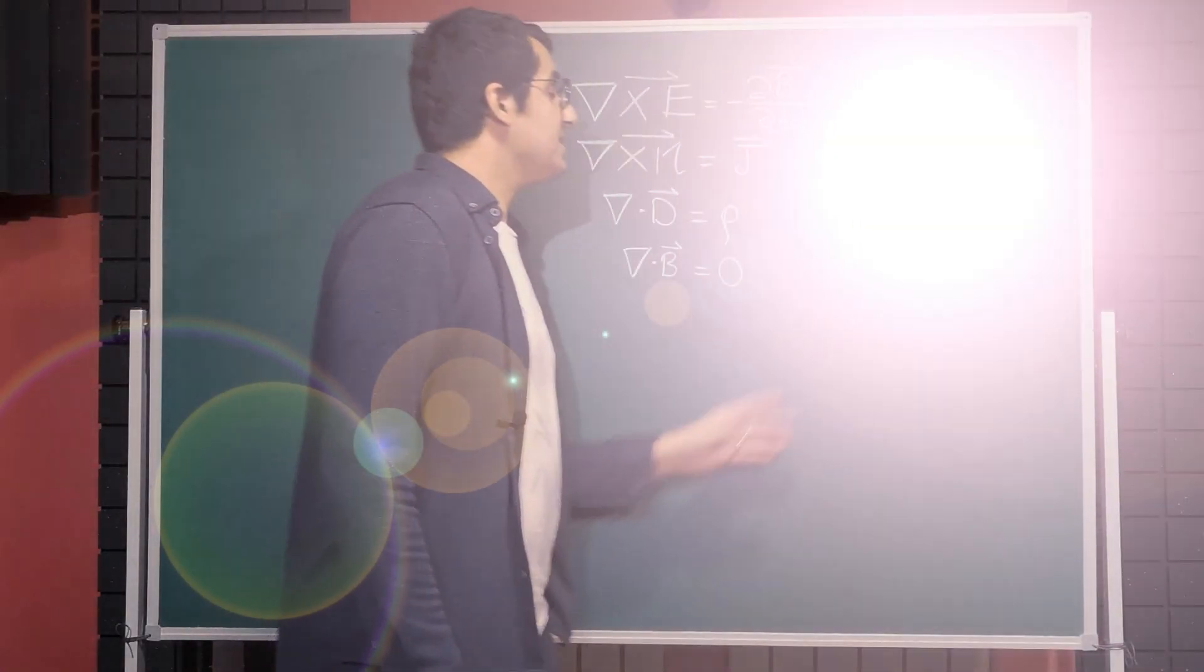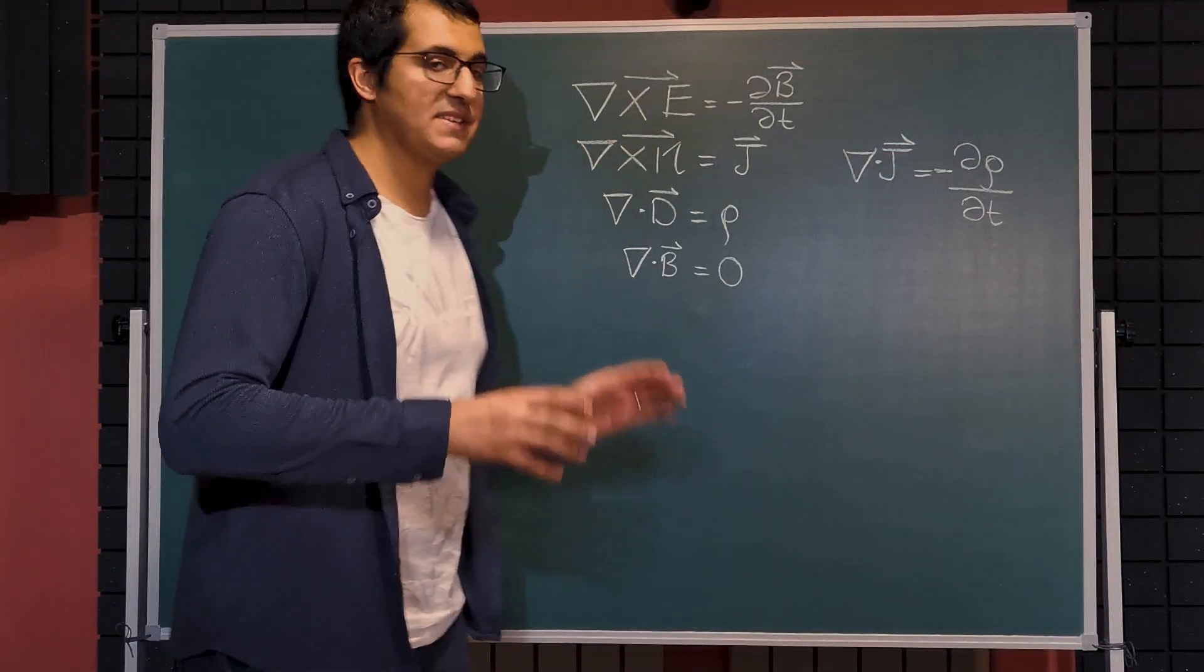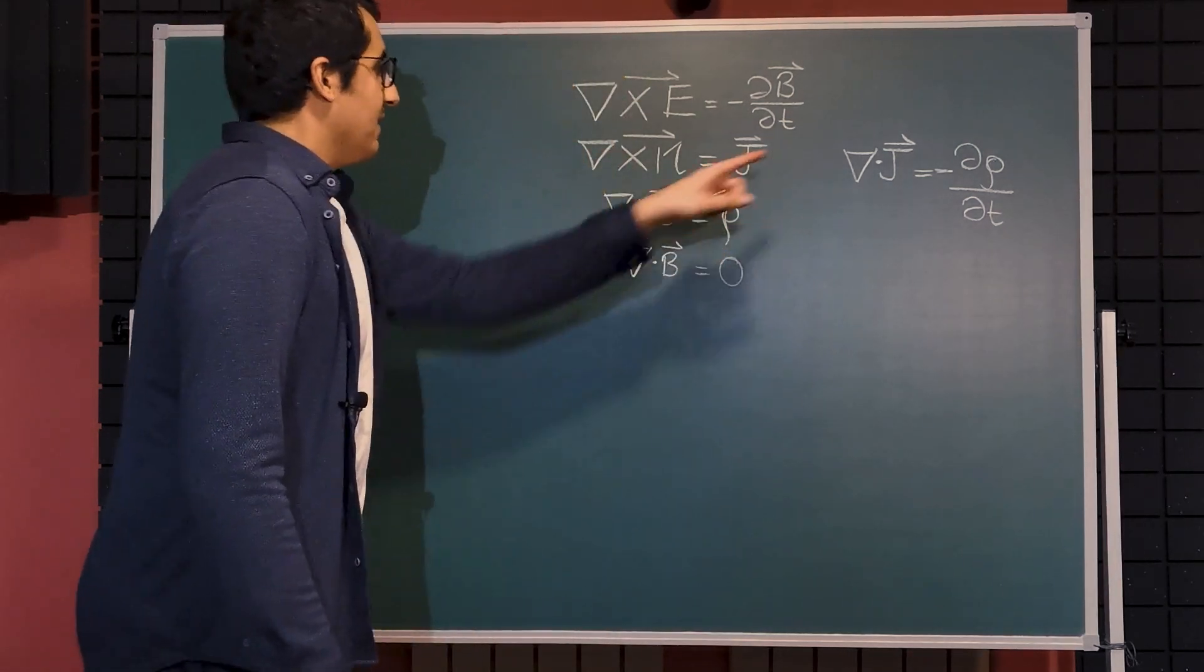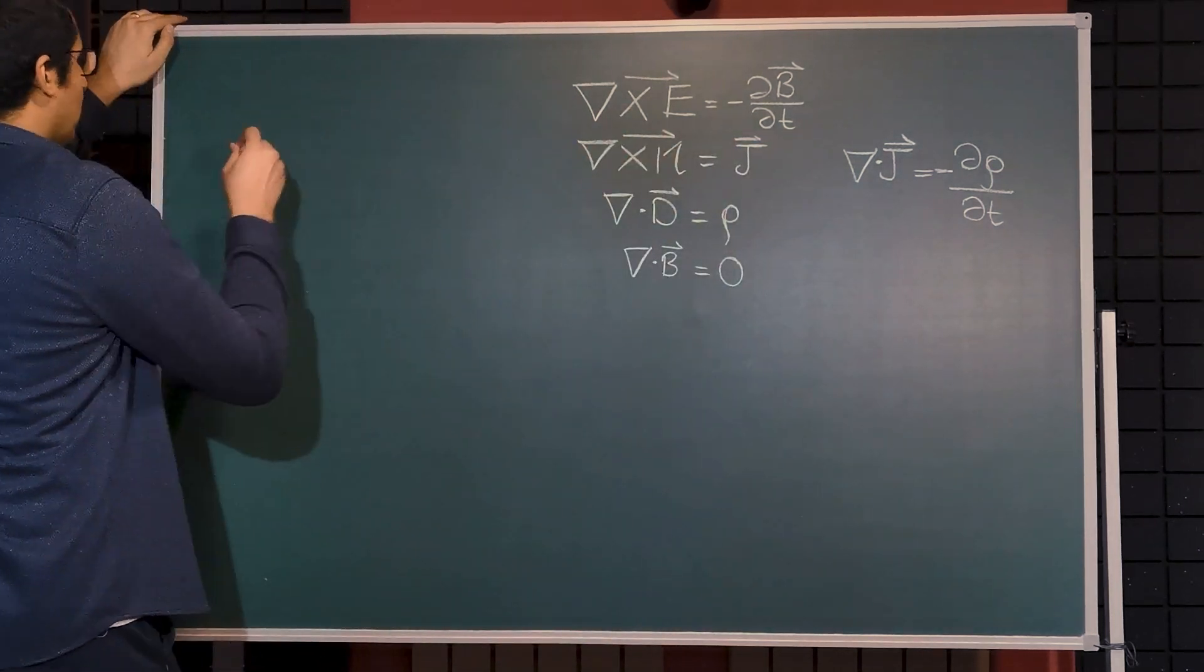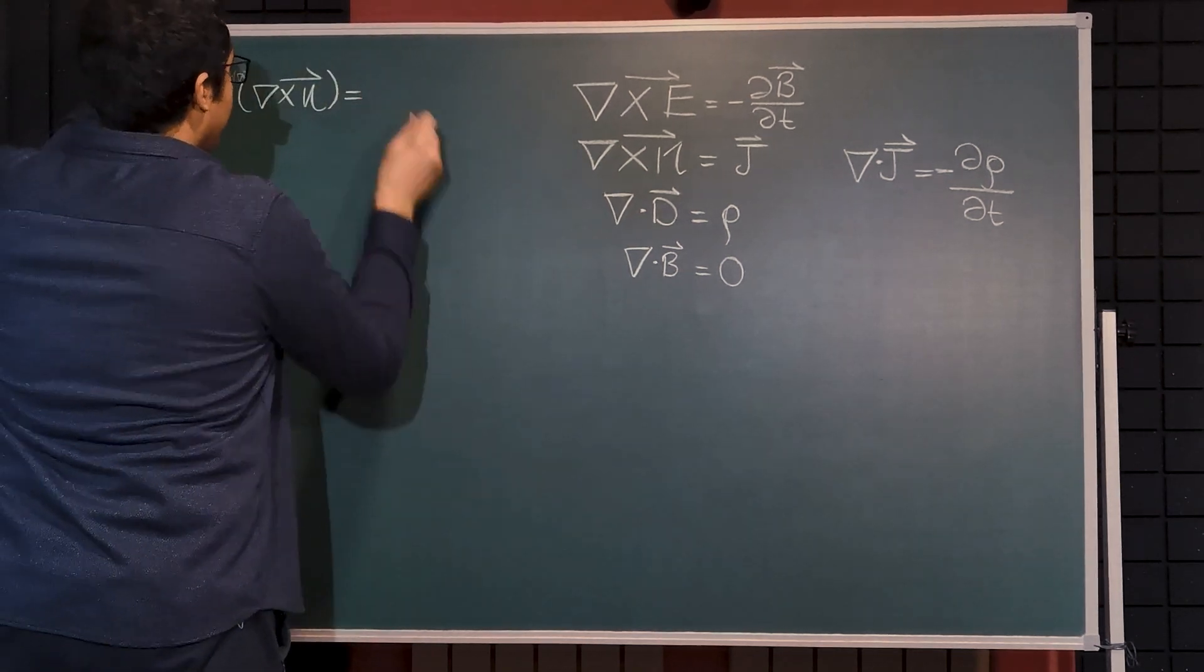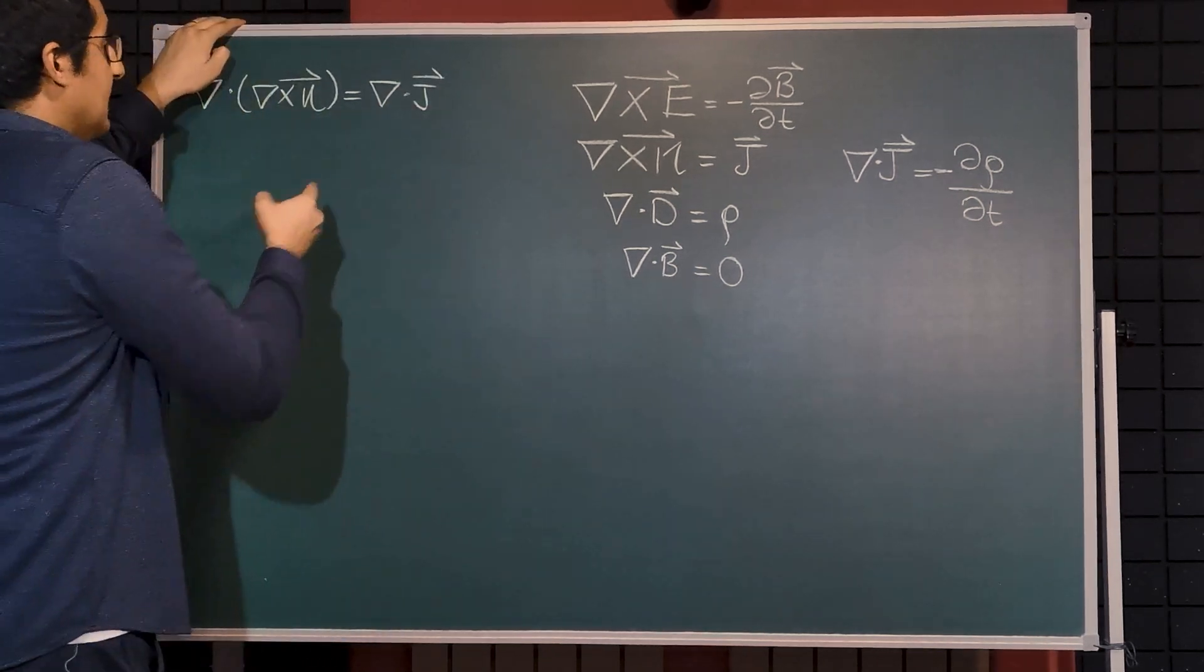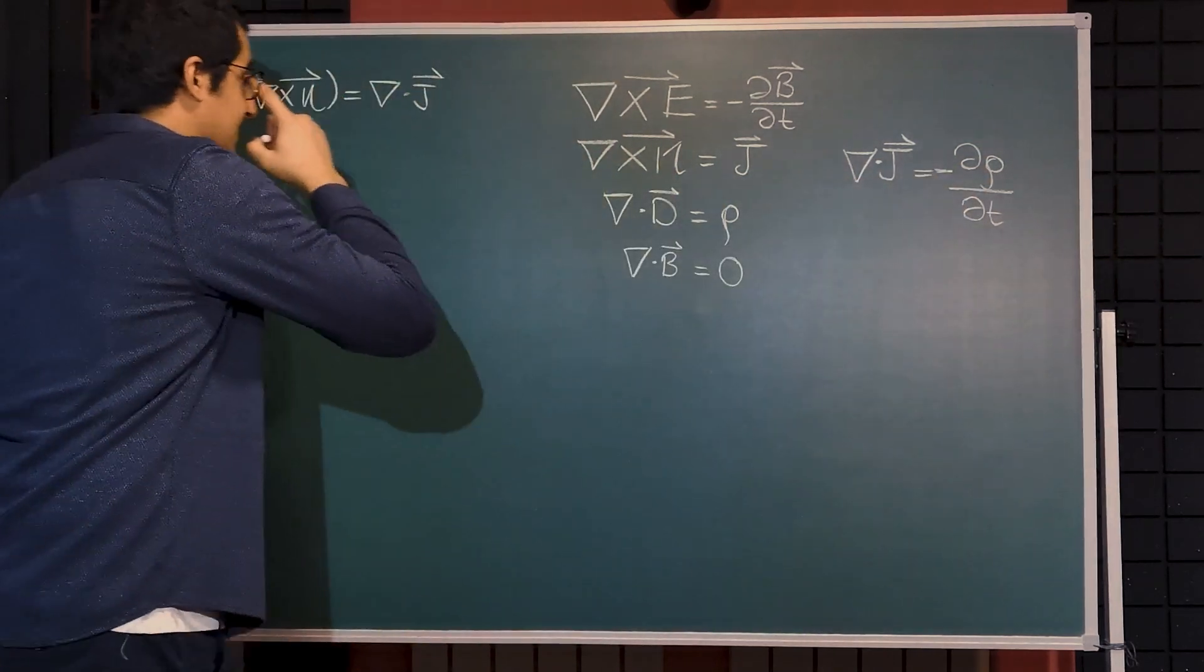And the continuity equation is also valid for electrodynamics. That means when there is a time rate of change of everything. And according to continuity equation, we can apply divergence to the second equation of Maxwell's equations. That will be divergence of curl of magnetic field would be equal to divergence of J, which is the continuity equation. This must be equal to the negative rate of change of the charge density with respect to time.